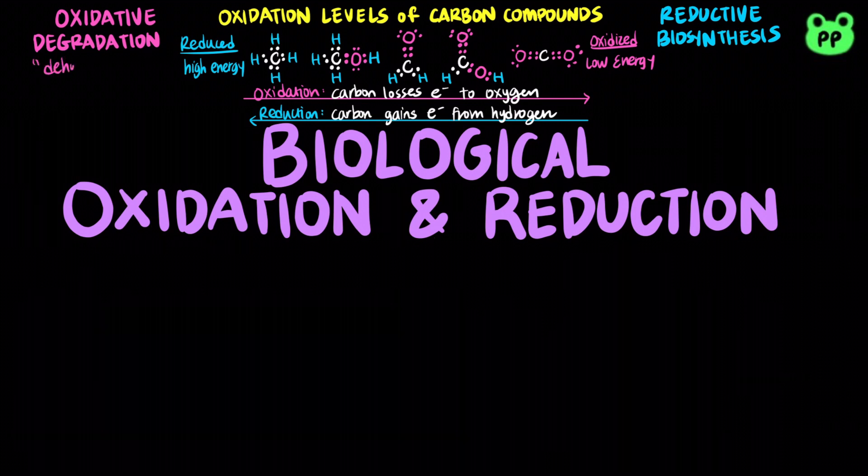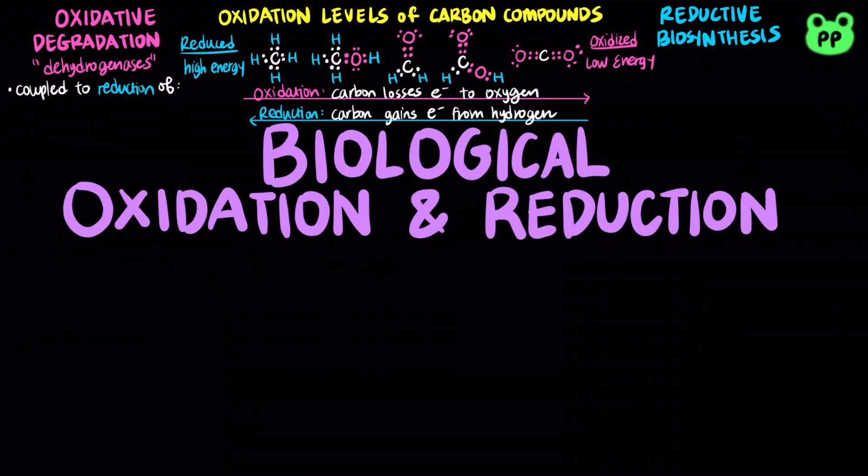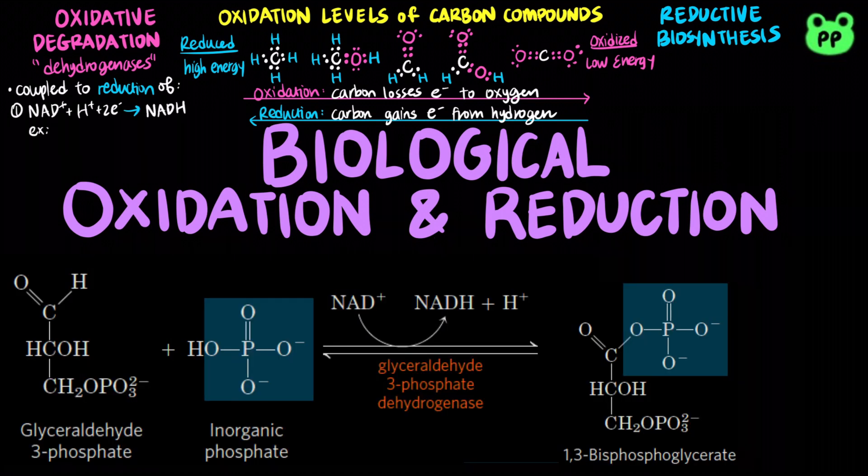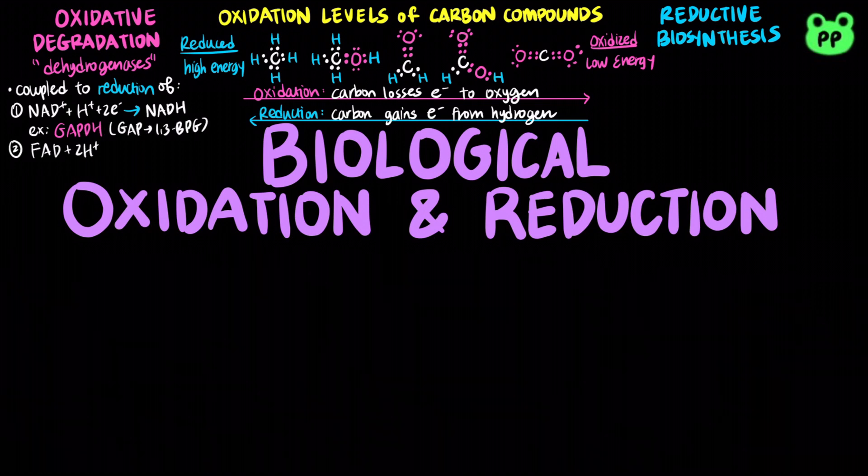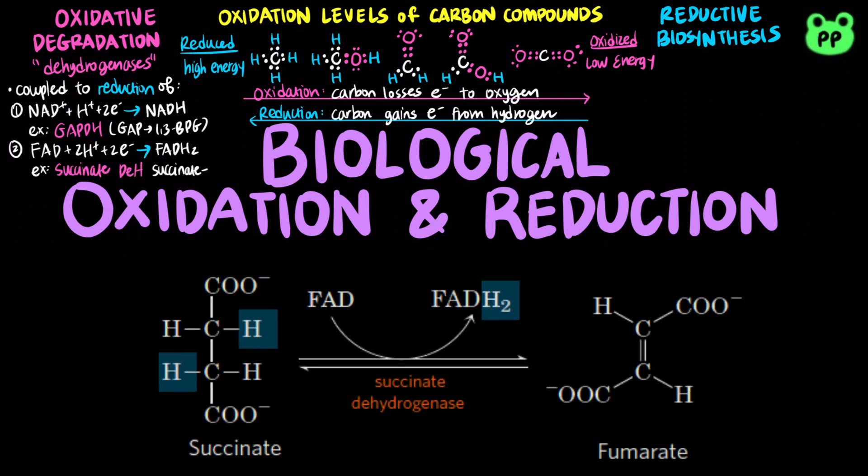In biological systems, oxidation is often synonymous with dehydrogenation. Dehydrogenases catalyze oxidative degradation of biomolecules, which releases free energy that is stored in the reduction of either NAD+ to NADH, such as in glyceraldehyde 3-phosphate dehydrogenase during glycolysis, or the reduction of FAD to FADH2, such as in succinate dehydrogenase during citric acid cycle.